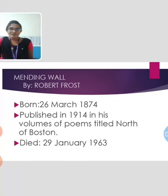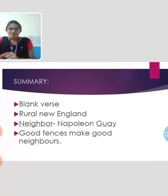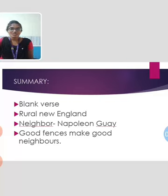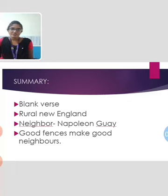He died on 29th January 1963. This poem was written in blank verse and set in rural New England. Robert Frost speaks about something that doesn't love the wall and it causes the walls to be broken frequently. Every year the speaker and his neighbor used to repair the walls but there is no use of it.